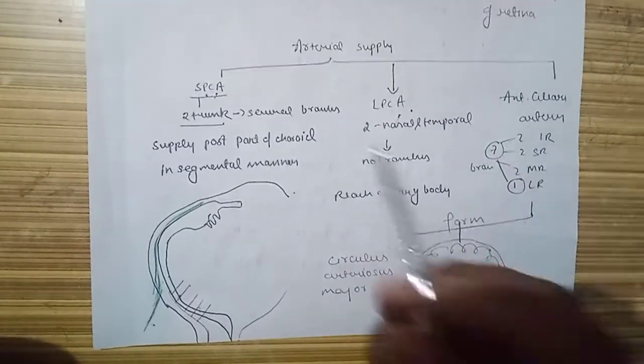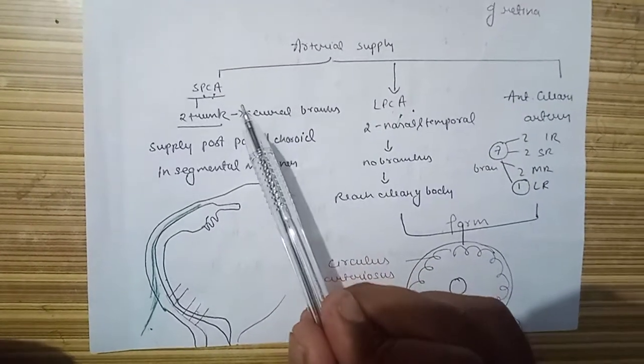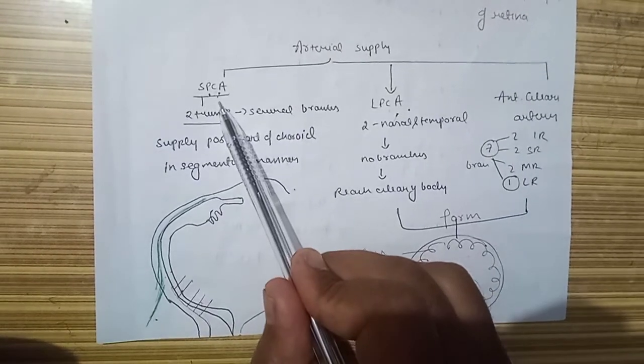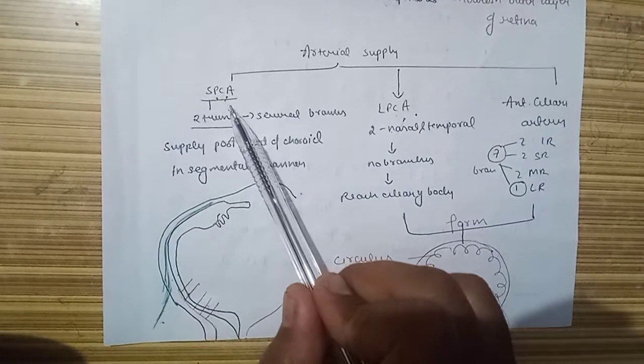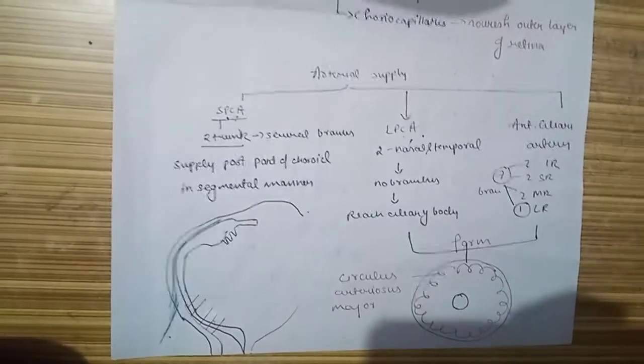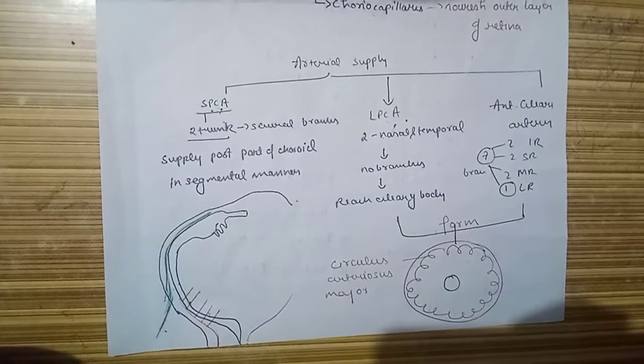The posterior ciliary arteries include the short one and the long one. As the name suggests, the short posterior artery does not reach up to the iris; it terminates at the vortex.